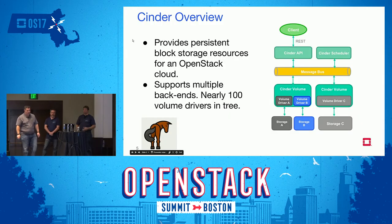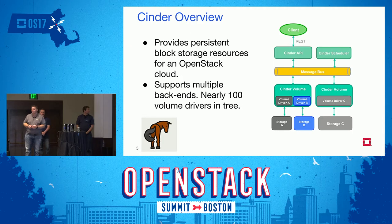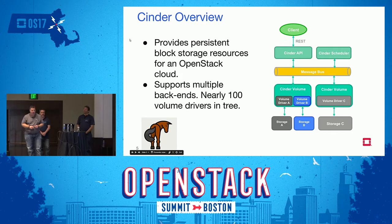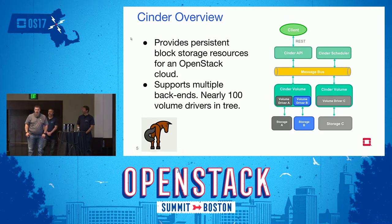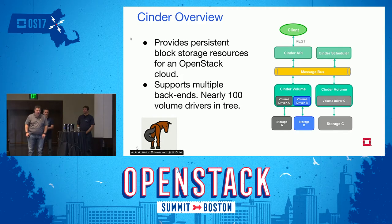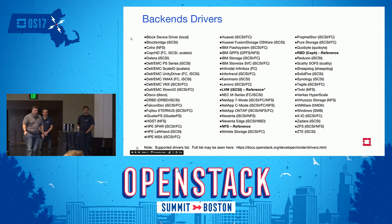Cinder is the block storage service for OpenStack. It supports multiple backends — nearly a hundred, though the number grows and shrinks depending on where we are in a release cycle. The design is the same as many other OpenStack services: a client, an API, and a scheduler that talks to one or more volume services, which can run on the control node or on dedicated storage volume nodes, and may talk to remote NAS or other storage servers.